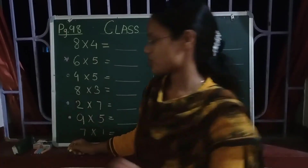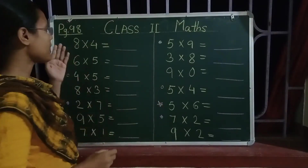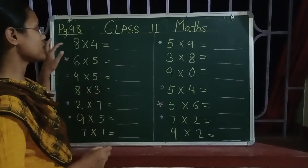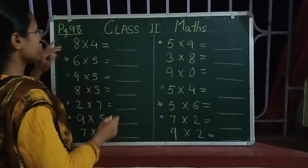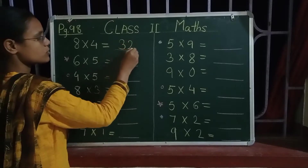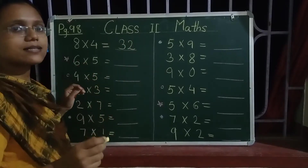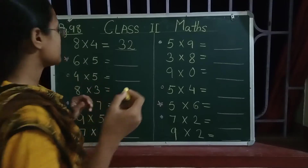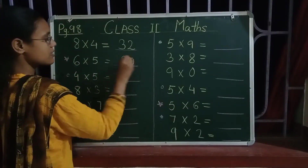Let us see the questions over here. Your first question is 8 into 4 is equal to what? Let us read the table of 8 up to 4. 8 fours are 32. Now the next number is 6 into 5. 6 fives are 30.